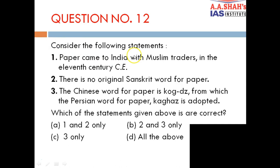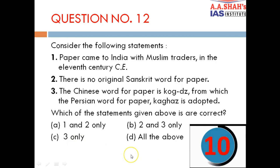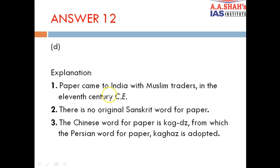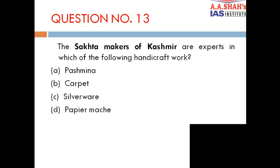Question 12: Consider the following statements. 1. Paper came to India with Muslim traders in the 11th century. 2. There is no original Sanskrit word for paper. 3. The Chinese word for paper is Kogzee, from which the Persian word for paper, Kagaz, is adopted. The correct answer is D — all statements are correct. All three facts are directly from the NCERT text: paper arrived via Muslim traders, there is no original Sanskrit word for it, and Kagaz derives from the Chinese Kogzee.